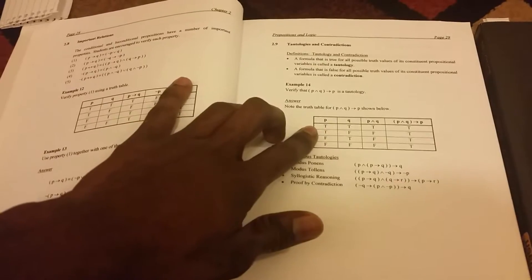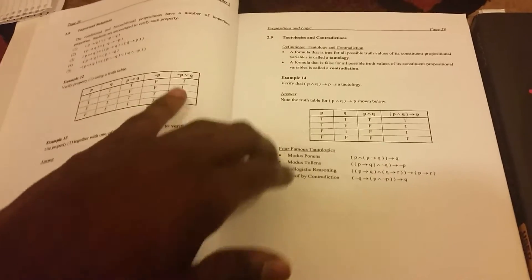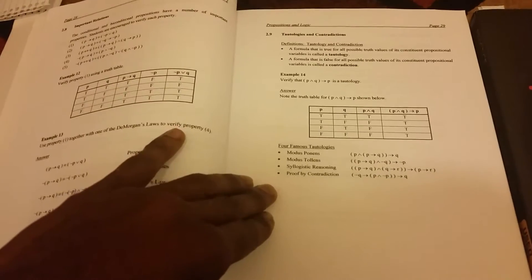Here we have Tautologies and Contradictions. So it gives you the definition of a tautology, the definition of a contradiction, and then shows an example of a truth table of a tautology, and then even shows examples of four famous tautologies. So that's pretty cool.